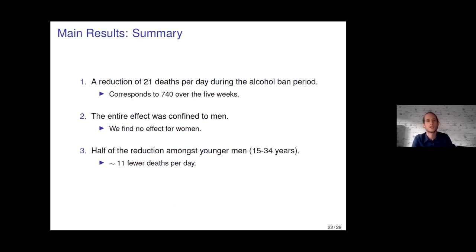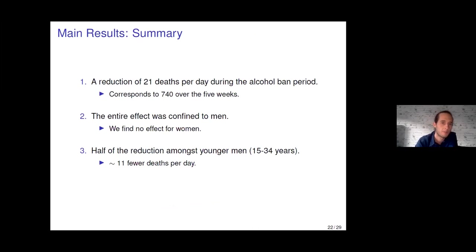To summarize the main results: we see a reduction of 21 deaths per day during the alcohol ban period, corresponding to around 740 fewer deaths over the entire 36-day period. This entire effect was confined to men — we find no effect for women. Approximately half of this reduction is observed amongst younger men aged 15 to 34, where we observe 11 fewer deaths per day.